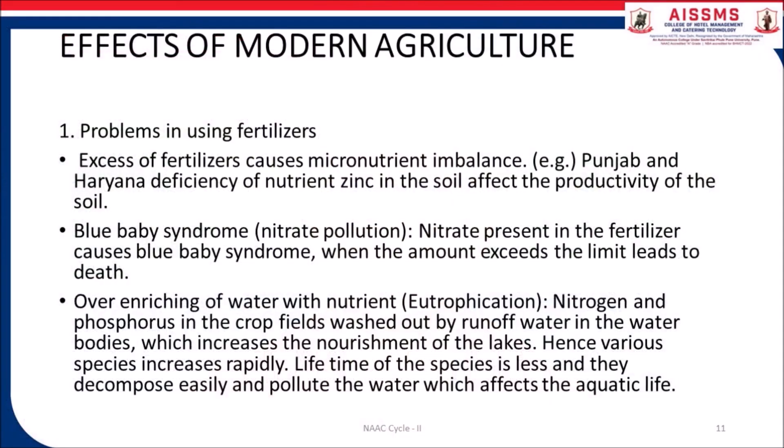Let us understand the effects of modern agriculture. Problems in using fertilizers: excess fertilizers cause micronutrient imbalance — for example, in Punjab and Haryana, deficiency of zinc in the soil affects the productivity of the soil. Blue baby syndrome — nitrogen present in the fertilizer causes blue baby syndrome. When the amount exceeds the limit, it leads to death. Over-enriching of water with nutrients — nitrogen and phosphorus in crops wash out by runoff water into water bodies, which increases the nourishment of the lake.